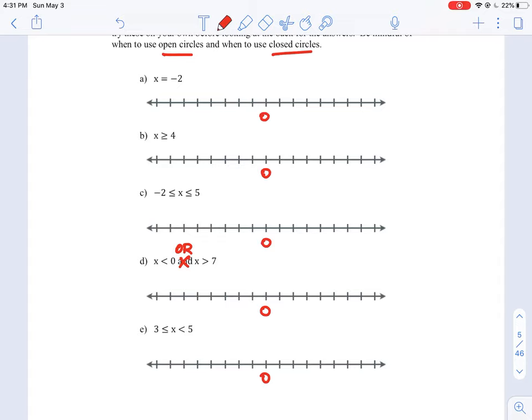So the first question here is x is equal to negative 2. Because it is an equal sign in the question, we're saying x equals negative 2, this means that we have to use a closed circle. The closed circle implies that we are including the number negative 2 in our solution.